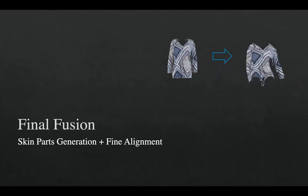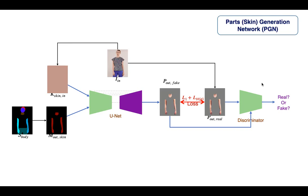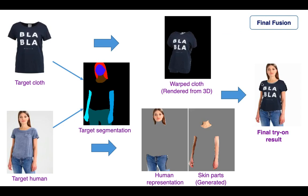The final stage of Cloth Vuitton is to generate the clothing-affected target body skin parts and fuse all target segments to generate the final try-on result. We use the parts generation network (PGN) to generate the target body skin parts from the target body segmentation, using a GAN architecture. Finally, we fuse the input human representation (the unchanged body parts), the warped cloth from the 3D deformed cloth model, and the generated target body skin parts together. This way we do not lose any texture details, and our results do not suffer from any blurry effects, generating virtual try-on results with the highest quality possible.